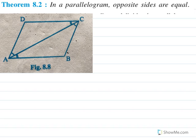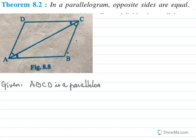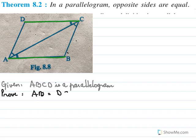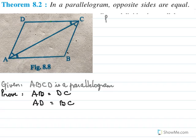In a parallelogram, prove opposite sides are equal. Given ABCD is a parallelogram, we need to prove that the opposite sides are equal. The opposite sides are DC and AB, so we need to prove AB equals DC. The other pair of opposite sides are AD and BC, so we need to prove AD equals BC.